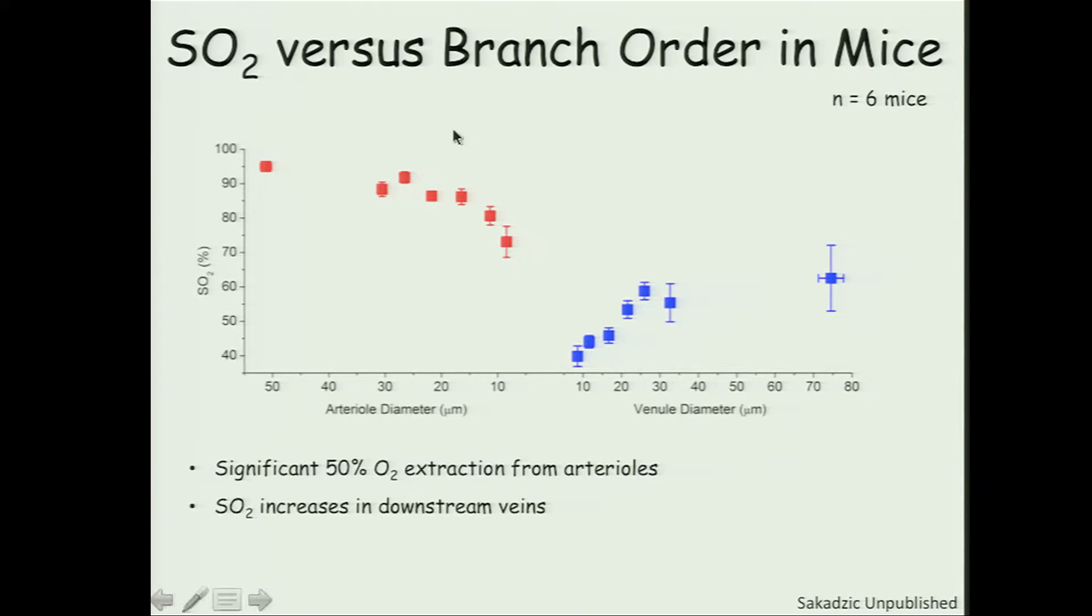The other is that the veins, in the smallest veins, have a very low SO2. And then as we go to downstream venules, larger diameter, you see a larger and larger SO2. This 60-65% is really a typical SO2 value in the veins. It's quite interesting, though, in the smallest veins it's much smaller, and this comes back to this heterogeneity.